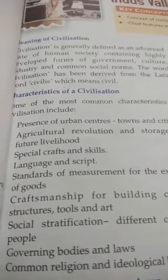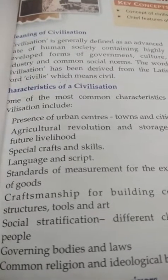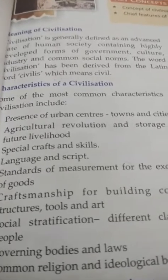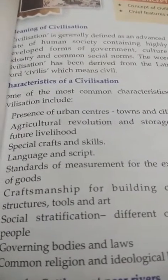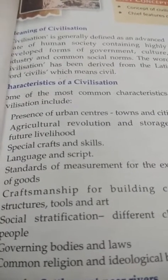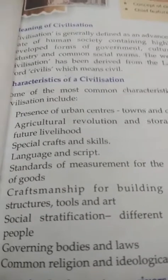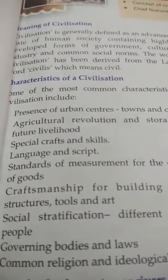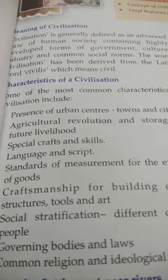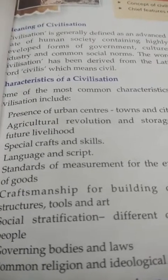Next are the characteristics of civilization. These are some common characteristics. First is the presence of urban centers — in a civilization there must be towns and cities. Then, agricultural revolution — the people must know how to cultivate more crops and how to preserve food.